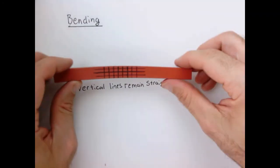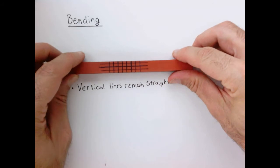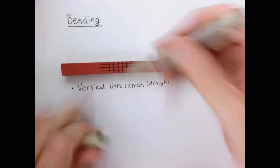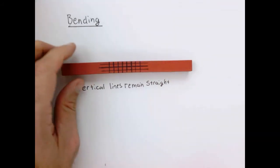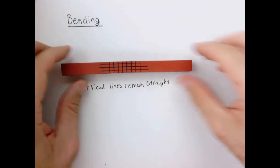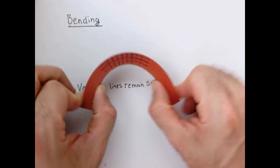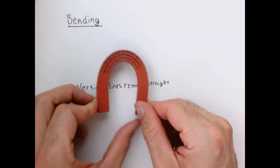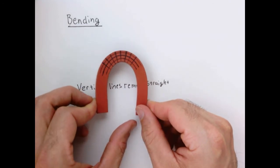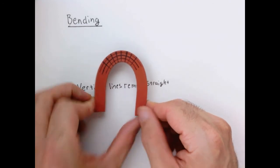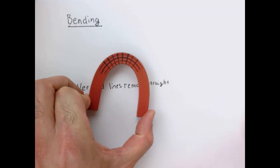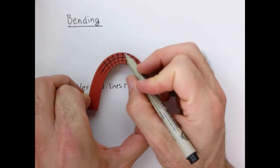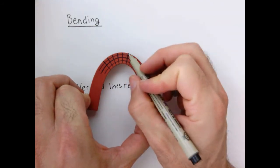The next thing I want you to focus on is the distance between those vertical lines at the top and at the bottom. In the undeformed configuration it's the same. But when I bend it, especially if I bend it very extreme, you should be able to see that the lines are closer to each other at the bottom — they're closer down here — and here they spread apart a little bit.